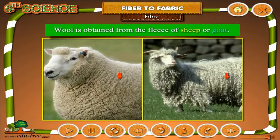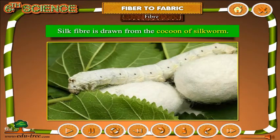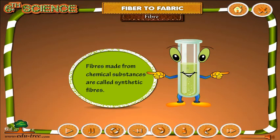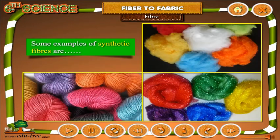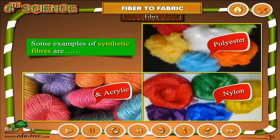Wool is obtained from the fleece of sheep or goat, and also from the hair of rabbits, yak, and camels. Silk fiber is drawn from the cocoon of the silkworm. Fibers made from chemical substances are called synthetic fibers. Some examples of synthetic fibers are polyester, nylon, and acrylic.